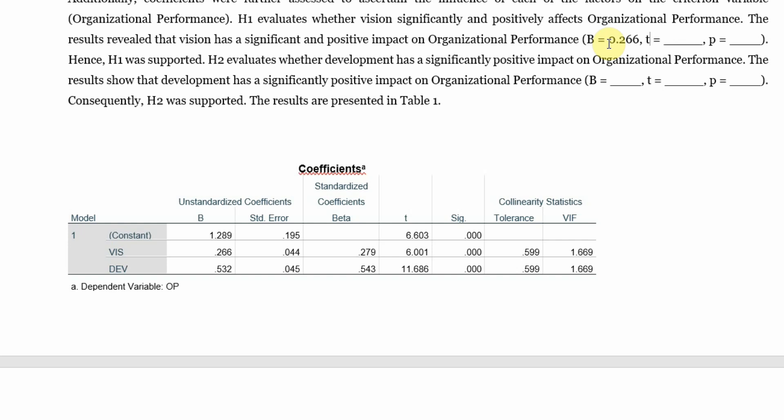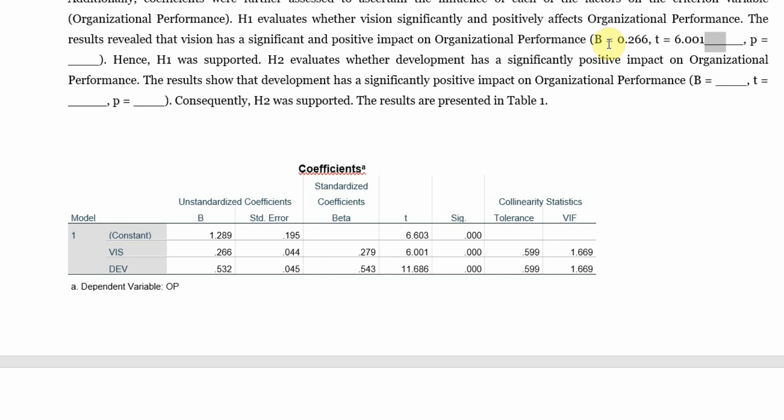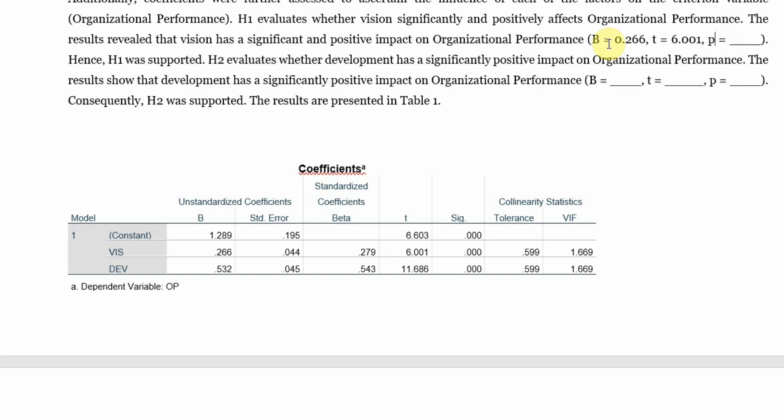The t-value is 6.011. It is less than 0.001 and hence H1 was supported.